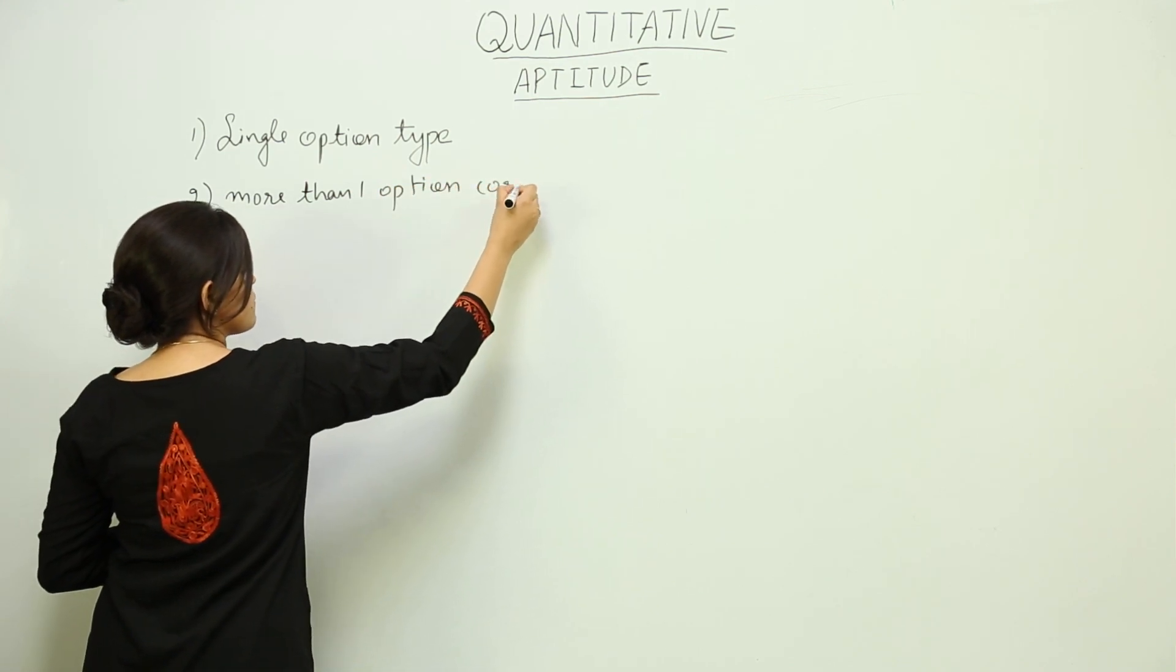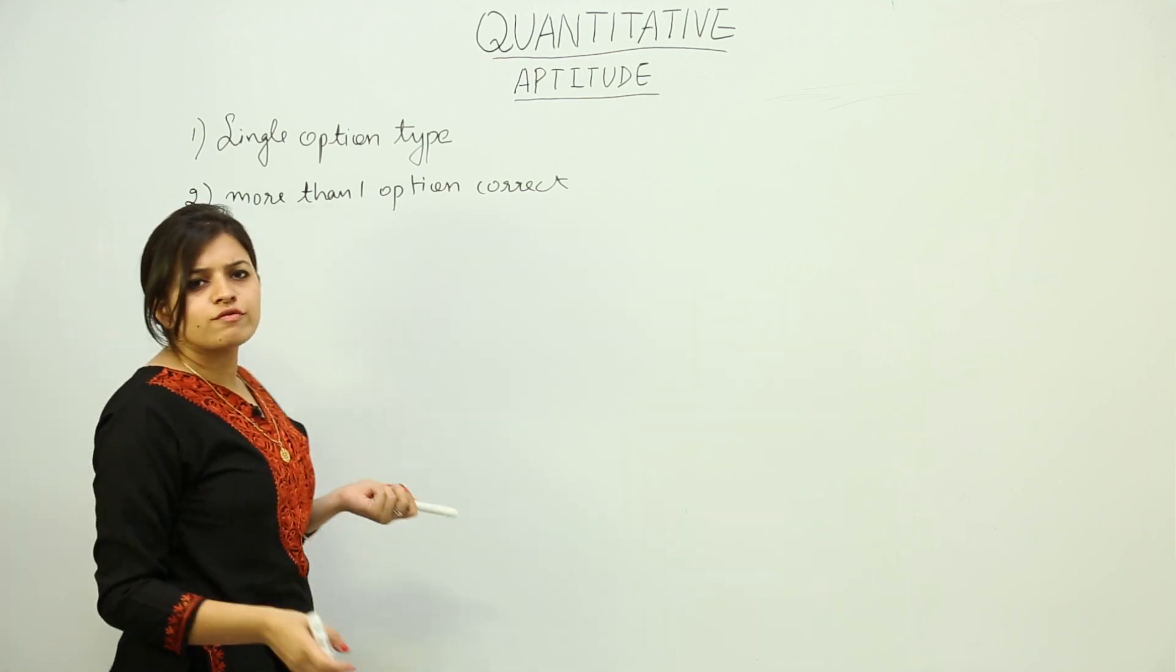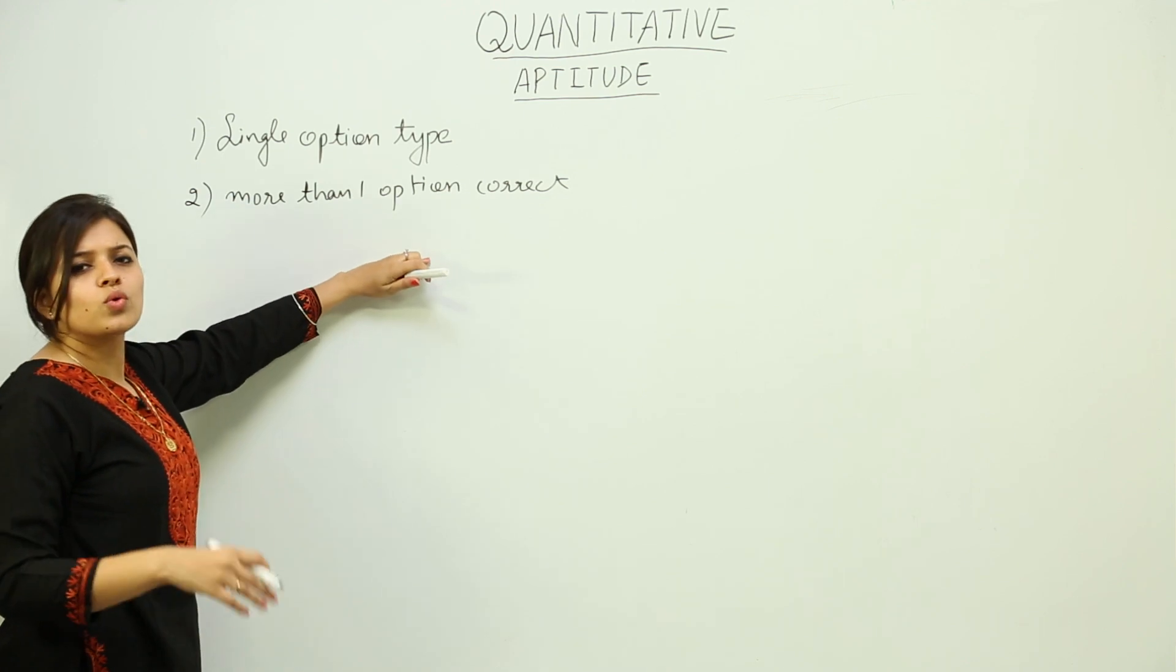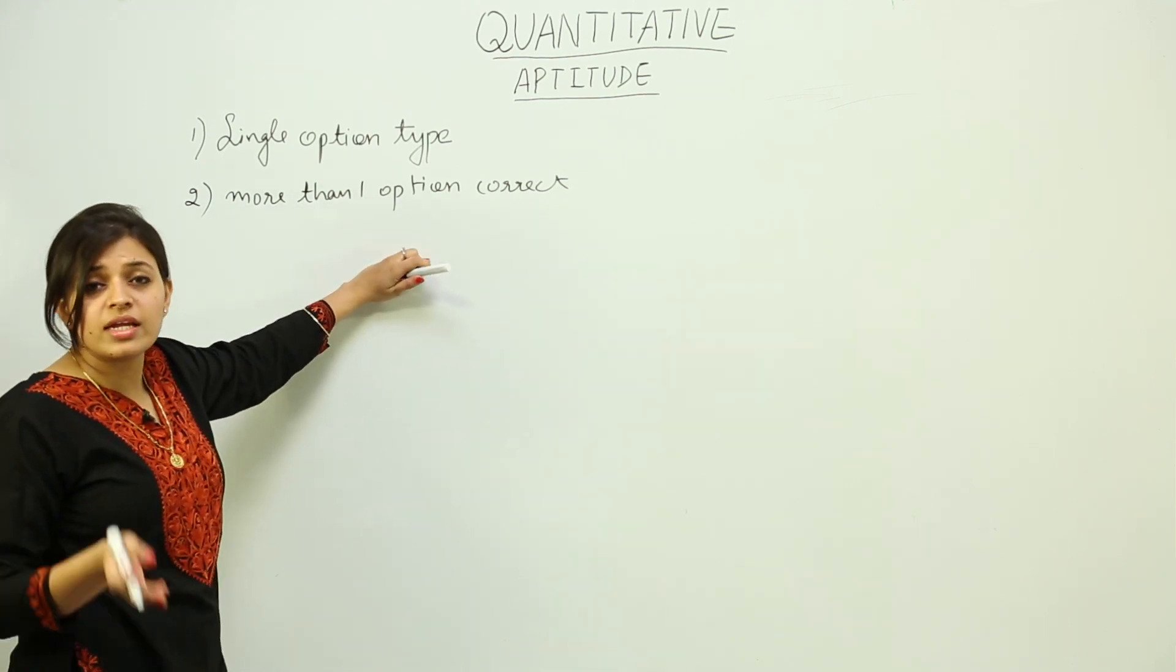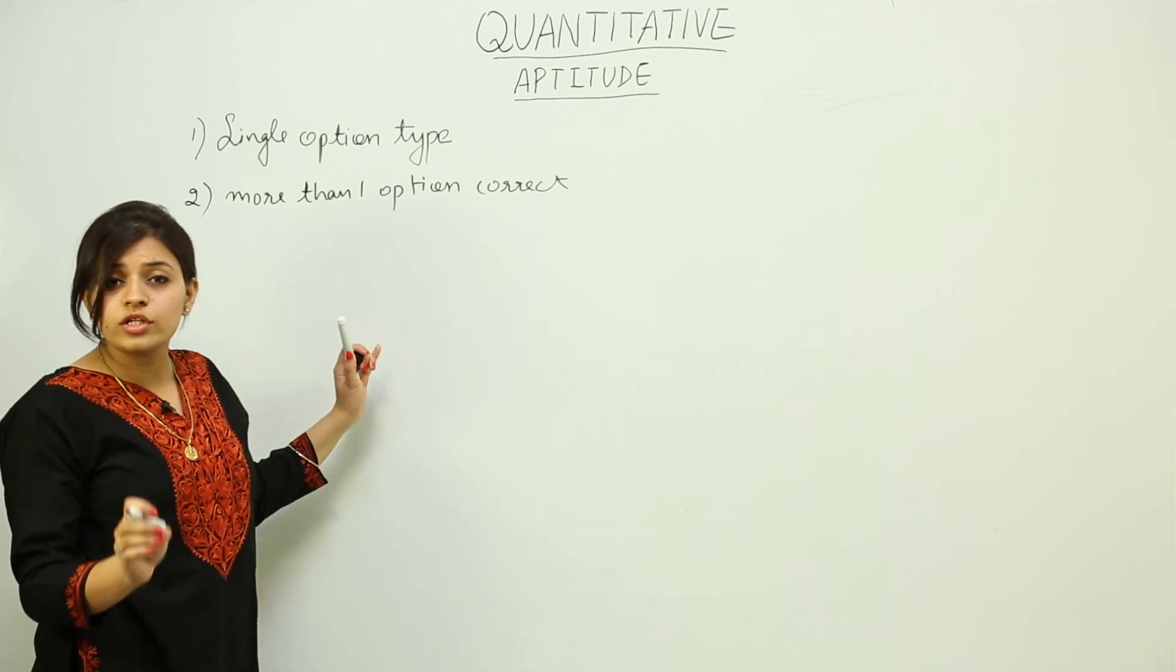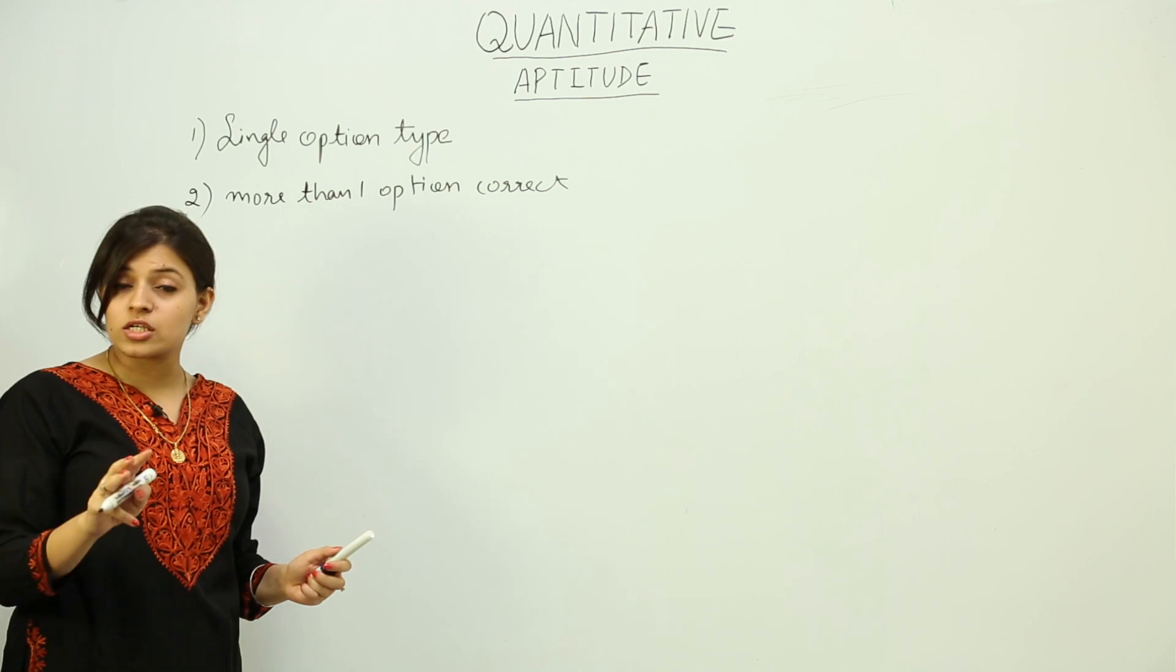This is also a familiar type that comes in almost all other exams. You will have a question followed by 4 to 5 options, and out of them 1, 2, or 3, or maybe all of them will be correct. You will be awarded marks only if you select all the options that are correct. If 4 are correct and you select 3, you will not be awarded marks for that.